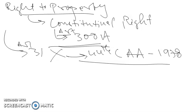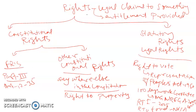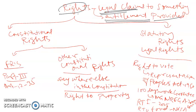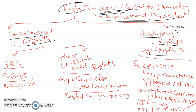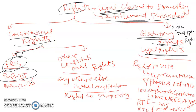Rights are legal claims to something or entitlements provided. There are two major types of rights: first, constitutional rights, and second, statutory or legal rights, also called non-constitutional rights. Under constitutional rights, there are fundamental rights, which are all those rights provided under Part 3 of the Indian Constitution from Article 12 to 35, covering right to equality, right to freedom, right against exploitation, and social and cultural rights.